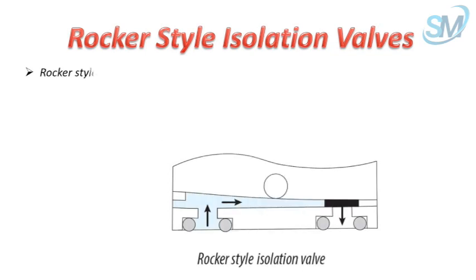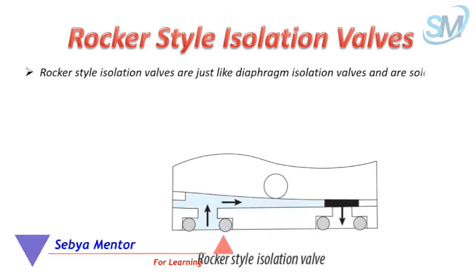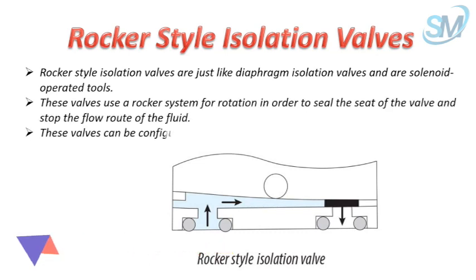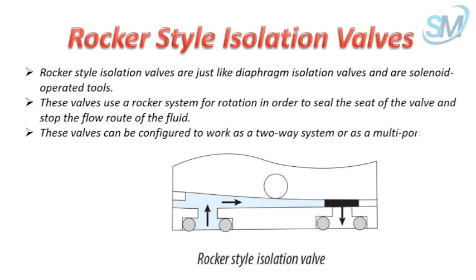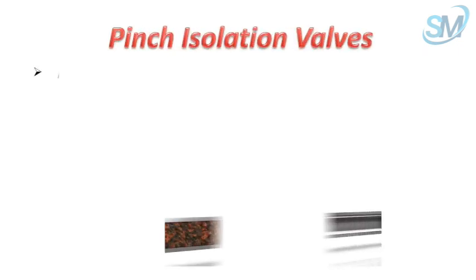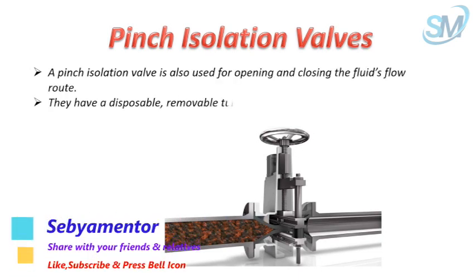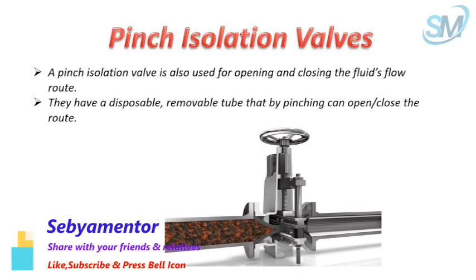Rocker-style isolation valves are similar to diaphragm isolation valves and are solenoid-operated tools. These valves use a rocker system for rotation in order to seal the seat of the valve and stop the flow of the fluid. They can be configured to work as a two-way system or as a multiport diverter or selector. They are also used for opening and closing the fluid's flow and have a disposable, removable tube that, by pinching, can open or close the flow.